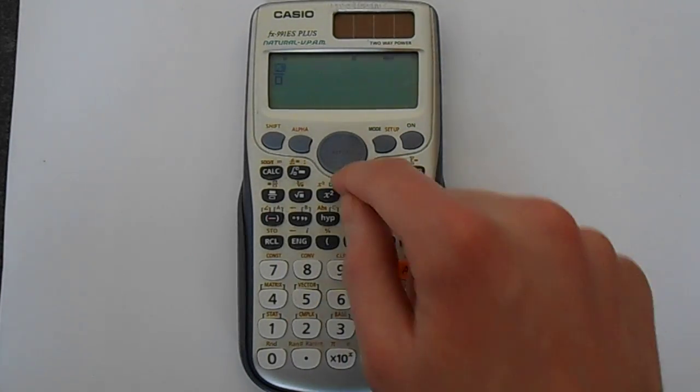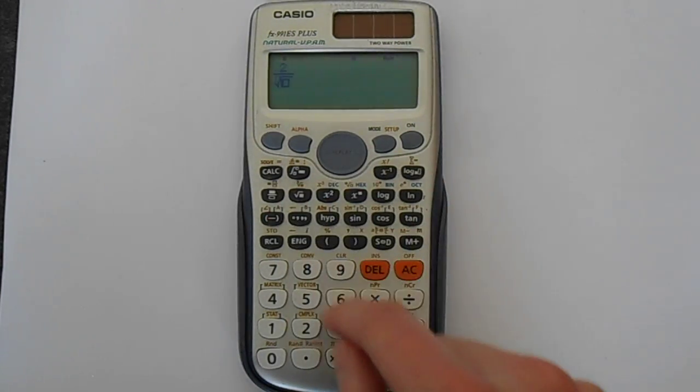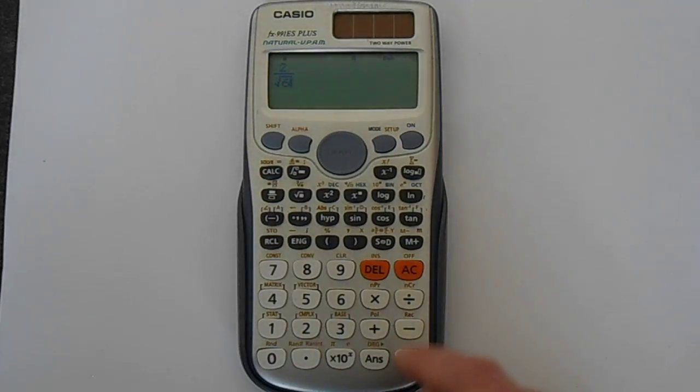It even knows things like common denominator. Well, of course it knows that. It knows how to simplify denominators. So it'll rationalize this for you.